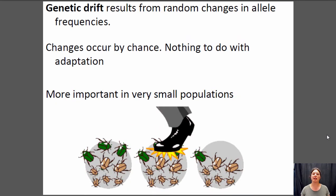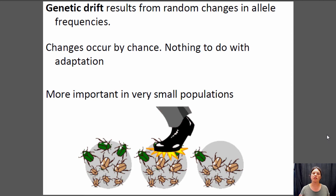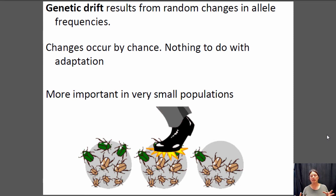Let's talk about genetic drift. Remember, gene flow means moving from one place to another, but if you're drifting, you're just floating around randomly — you don't go in any particular direction. Genetic drift is a random process that causes change in allele frequencies due to random chance. It doesn't have anything to do with fitness or adaptation — it's just stupid dumb luck that can cause allele frequencies to change. And it's more important in small populations than in large ones, because random events have a greater effect on small populations.